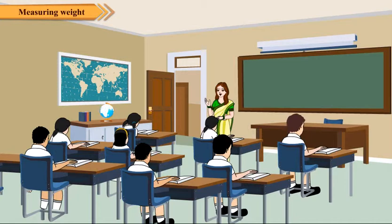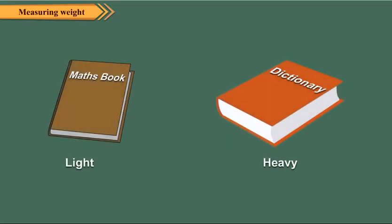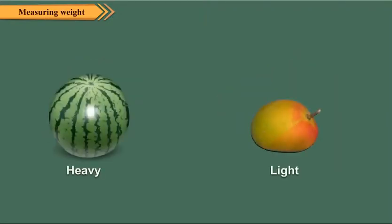Sometimes you can tell if the thing is heavy or light just by observing it. See, your maths book is lighter than a dictionary. A watermelon is heavier than a mango.